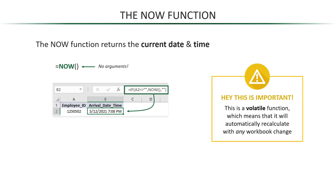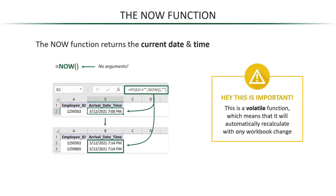However, this is a volatile function, which means that it will automatically recalculate with any workbook change. And this means that when a second employee enters his ID, both NOW functions will recalculate and return the current date and time, changing that time for the first employee — which no longer works correctly as a timestamp.